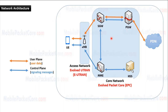While the user plane is used to pass user data sent and received between the UE and the PDN. The path of user plane data will be as follows: from the UE to the E-Node B, then from the E-Node B to the SGW, and from the SGW to the PGW, then from the PGW to the PDN. Thank you and see you in the next lesson.